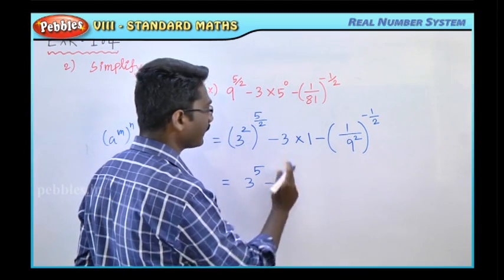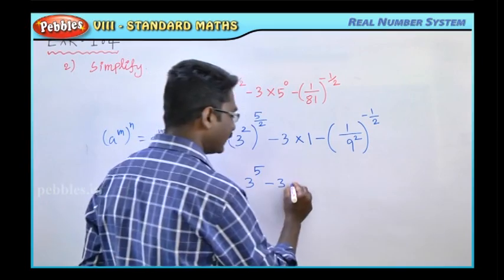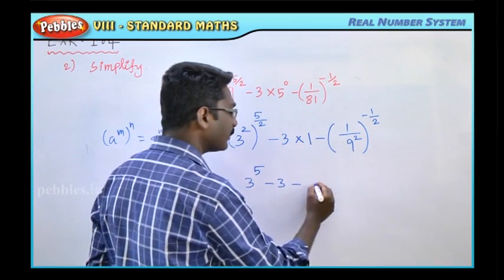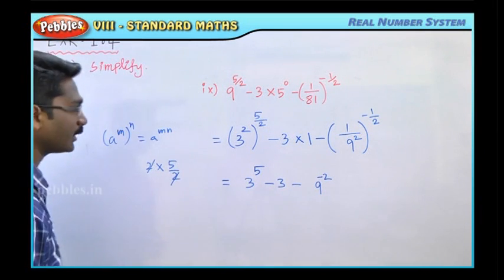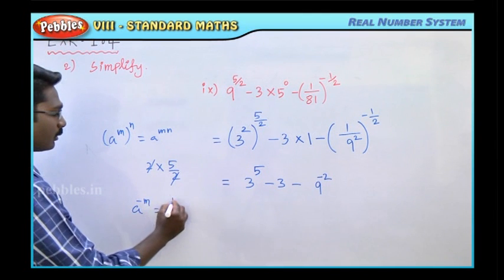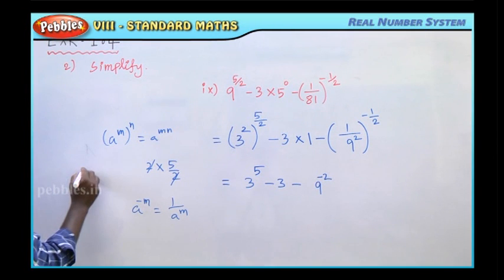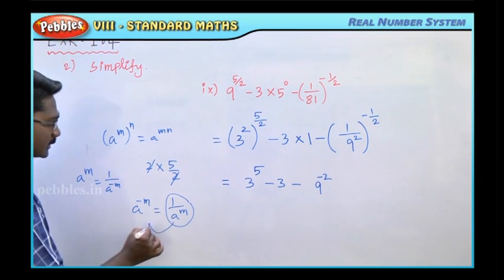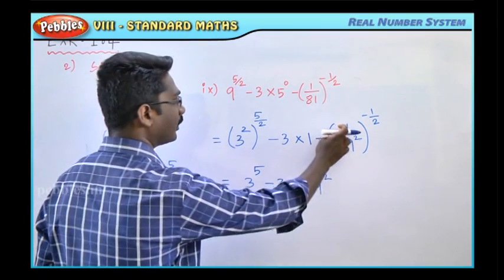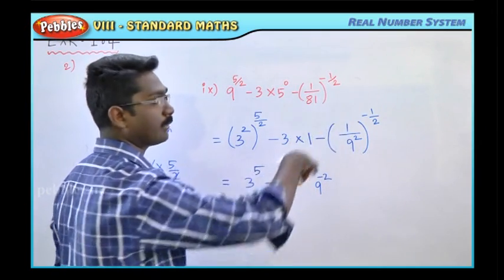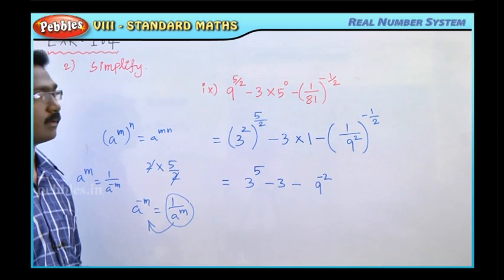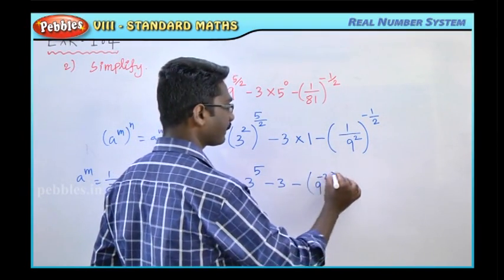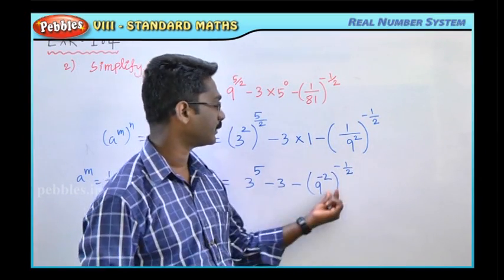Next number minus 3 into 1. So 1 by 9 square, 9 power minus 2. Law of reciprocal: a power minus m is equal to 1 by a power m. So 1 by 9 power 2.